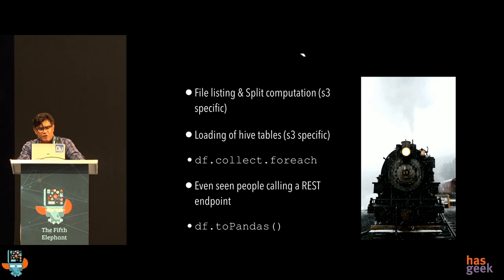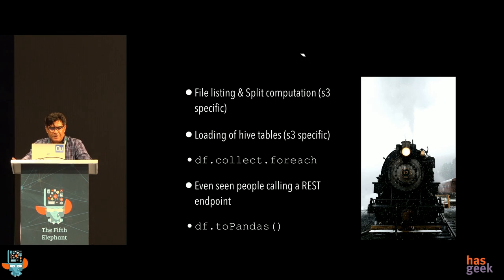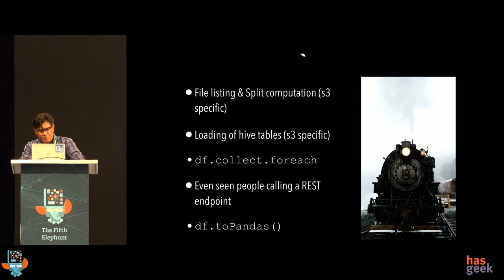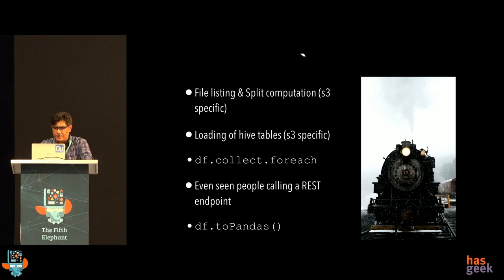A third place where driver time is wasted is the collect-then-for-each pattern. When you do a data frame collect and then start a for each loop, you get all the data from all the executors into the driver — usually you'll see out-of-memory errors. I've even seen people calling a REST API from the driver itself, for each record calling a REST API to update an external system. Similarly, in PySpark, converting a data frame to Pandas gives you a data frame running only on the driver, leaving all executor resources unused.